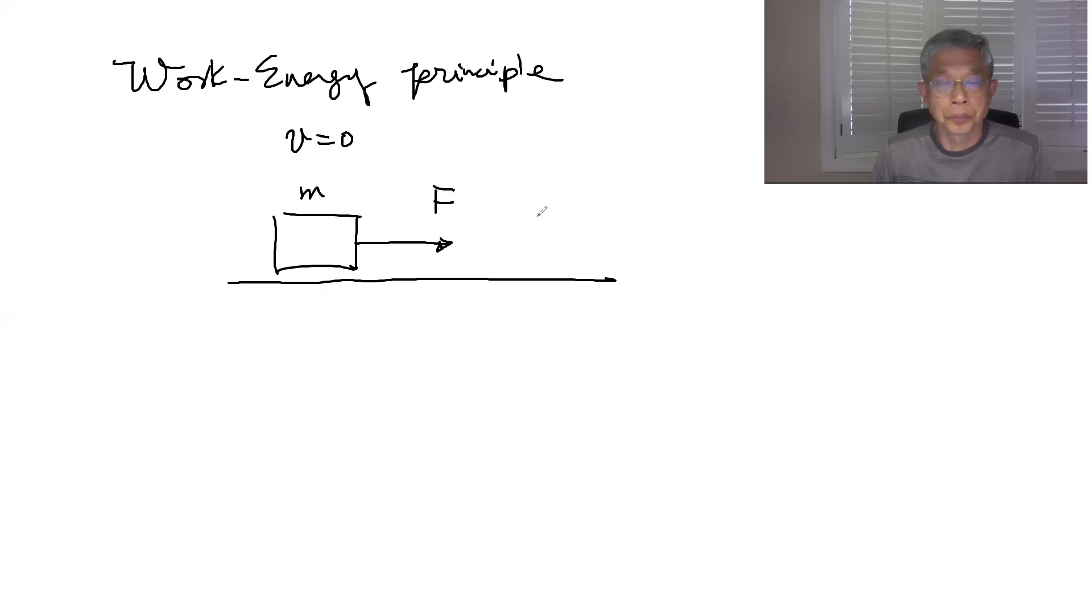And let's say after some time it moves a d distance. So now let's say this is equal to one meter and that's equal to one Newton and this is equal to one kilogram. So the question is if there's no friction, the question is what would be the velocity here, v prime?